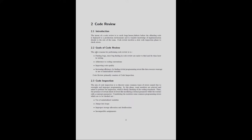The goals of code review include finding bugs, since bugs found in code review are easier to fix than later in the testing phase; adherence to coding conventions; improving code quality; and increasing efficiency by finding trivial programming errors like data resource wastage or use of uninitialized variables. Code review in this document is performed using the inspection method rather than the walkthrough method.